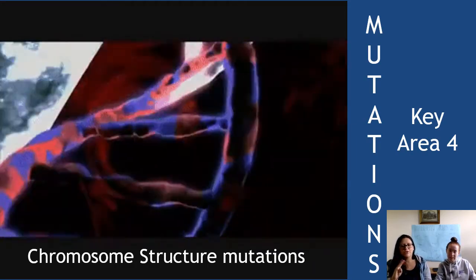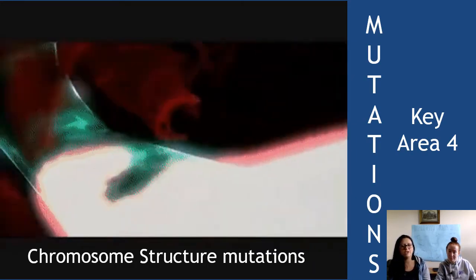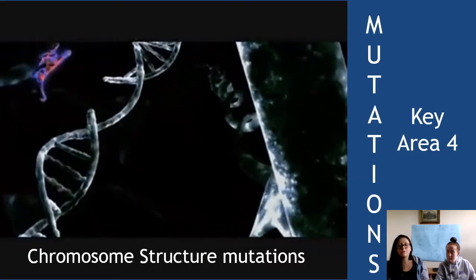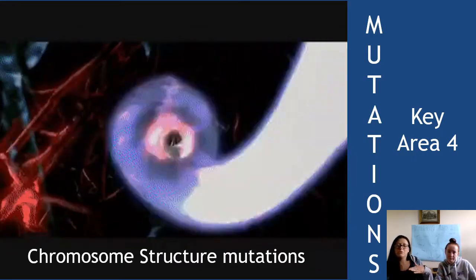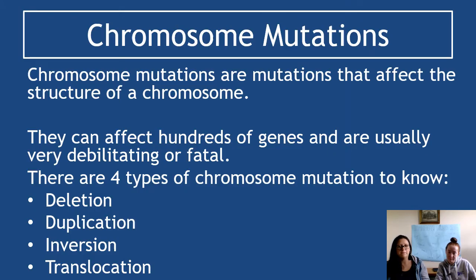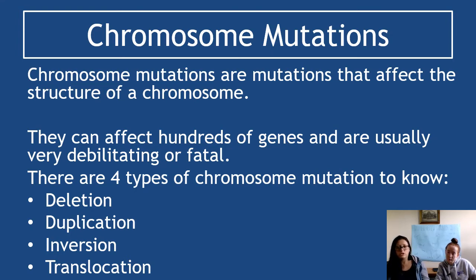This is section three, the final section of key area four on mutations, focusing on chromosome structure mutations. These are mutations that affect the structure of a chromosome — you should be able to see a physical difference. They can affect hundreds of genes and are usually very debilitating or fatal. It's important to note that chromosome structure mutations are usually fatal — that's a key point to highlight in your notes.